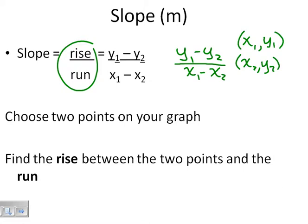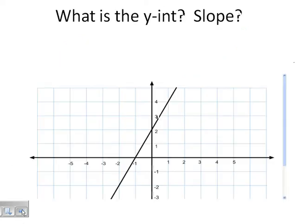First, I'm going to show you how to do it with a graph. You're going to choose two points on your graph and find the rise — up and down — and the run — left or right.